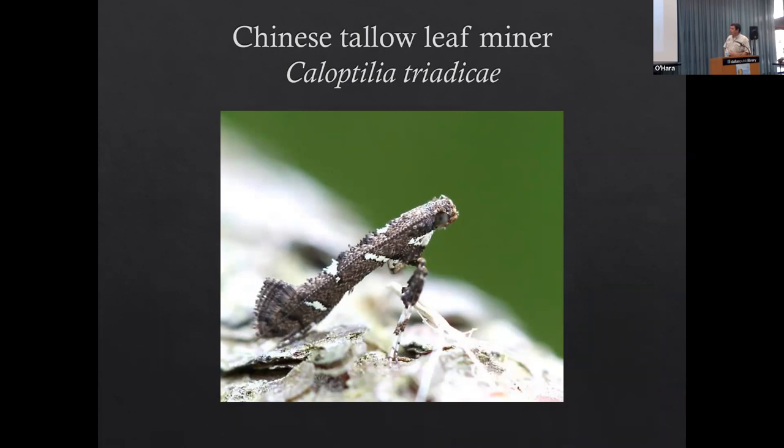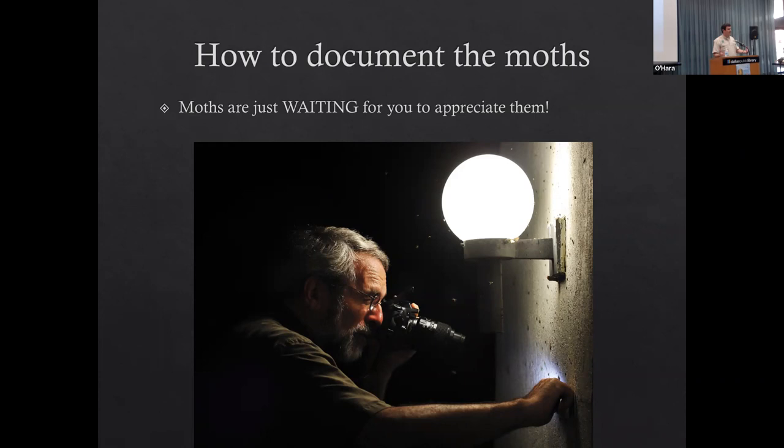Another really interesting one - this is called the Chinese tallow leaf binder. Some of the caterpillars will form little mazes in a leaf, and you might see those as they go in between the epidermis, the outside layer of the leaf, and nibble on the inside. So moths are fascinating.